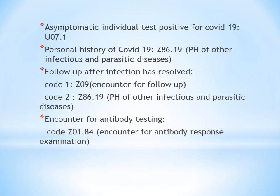Next is personal history of COVID-19. When should you give the personal history code? Personal history means the patient was once infected with COVID-19 but it is now resolved. If the patient was infected with COVID-19 in the past but does not have COVID-19 currently, you give the personal history code Z86.19: personal history of other infectious and parasitic diseases.